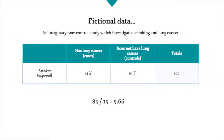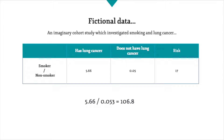To calculate the odds of being a smoker in the group with lung cancer, it's A divided by B, which gives 5.66. To calculate the odds of being a smoker in those without lung cancer, it's C divided by D, which gives 0.053. To express the odds of being a smoker in the group with the outcome to the group without the outcome, it's 5.66 divided by 0.053, which gives 106.8. This means, in this fictional example, that people with lung cancer are 106.8 times more likely to be smokers than those without lung cancer. If this were a real finding, it would be a very large odds ratio.